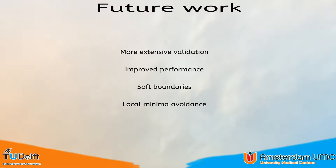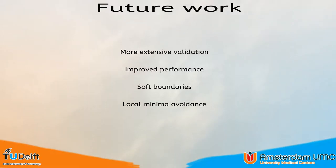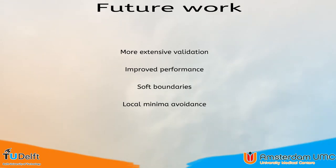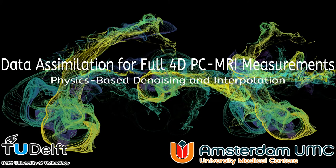One approach to improve performance would be to exclude empty voxels from the computation. Another improvement would be to use a penalty for flow outside the segmentation instead of using a hard segmentation boundary. Another option would be to use control forces, for instance using the geometric potential field introduced by Hong et al. Currently, the algorithm does not avoid local minima, which would be nice to have but would be very difficult given that the solution space is rather complex. Thank you for attending this presentation. I look forward to your questions.